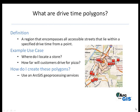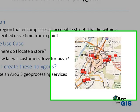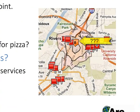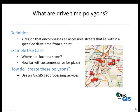Drive time polygons are simply regions that encompass all accessible streets that lie within a specified drive time from a point. Some example use cases are applications used to locate stores — if you know how far your customers drive for pizza, for example, you can overlay the drive time information on a base map and visualize it in more powerful ways than you could by just knowing that number by itself.